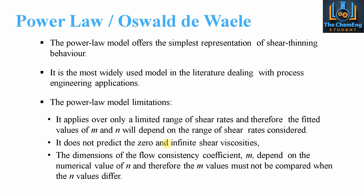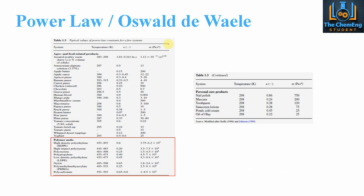The dimensions of the flow consistency coefficient m depend on the numerical value of n. Therefore, the value of m must not be compared when the value of n differs — this is very important. The value of m is dependent on the value of n, so you cannot use a standard means of comparison. The value of n has no units, whereas the value of m is in Pascal seconds to the power n. Depending on the power n gives us the corresponding value of m.